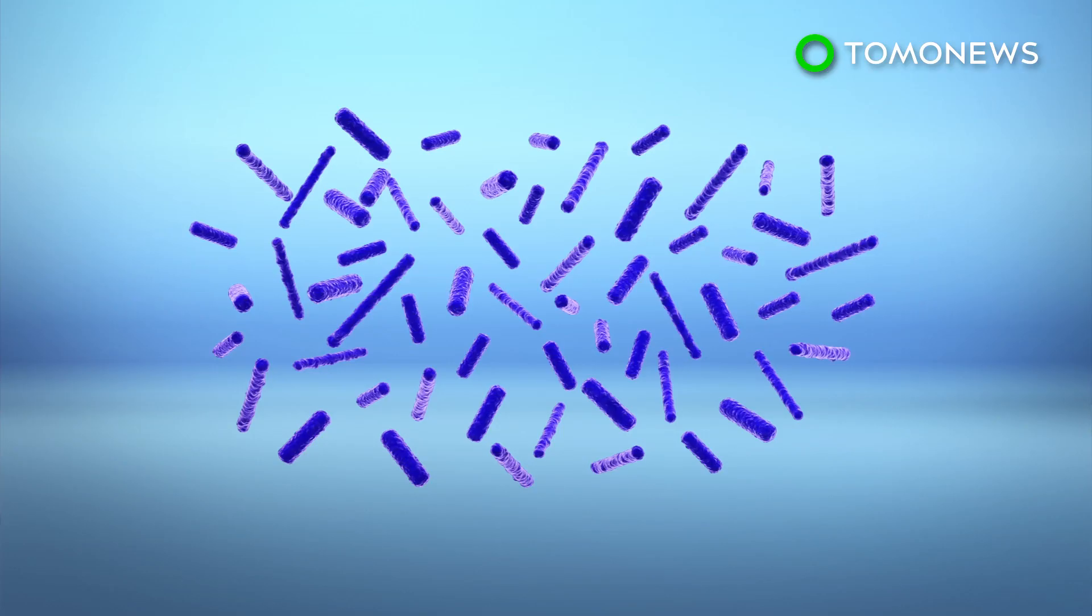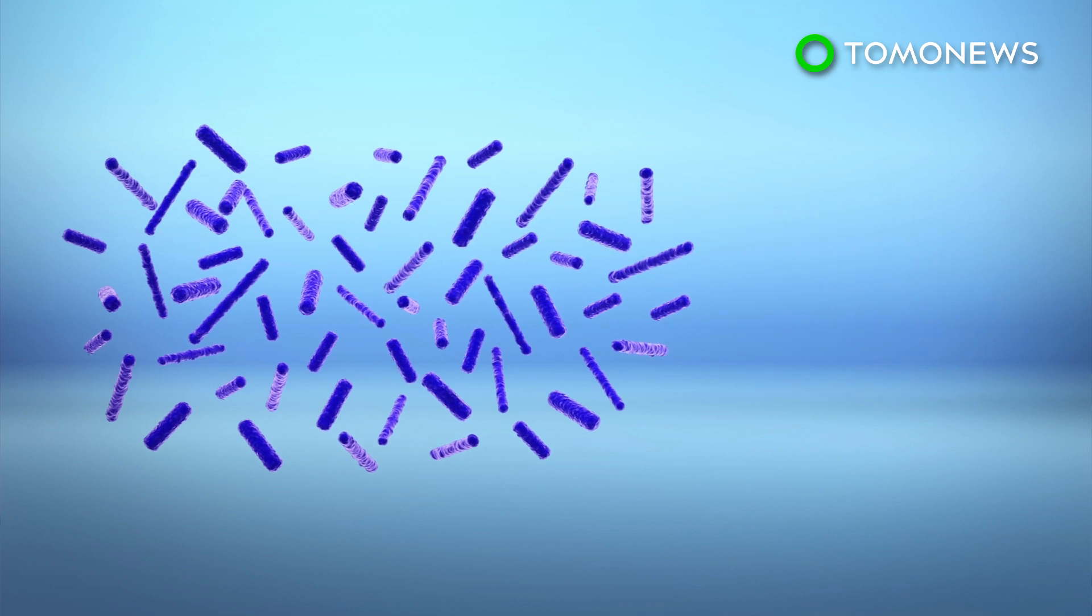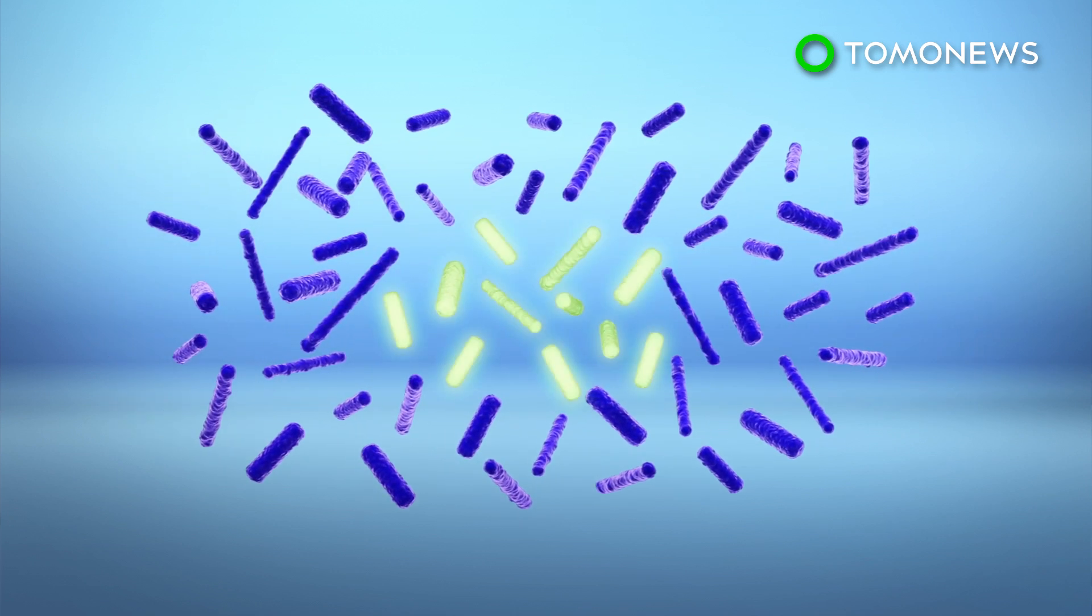According to the journal eLife, researchers at California State University and Princeton exposed a colony of E. coli to a molecule known as LL37. The molecule was slightly modified to give off a green glow that would allow researchers to track its movement.